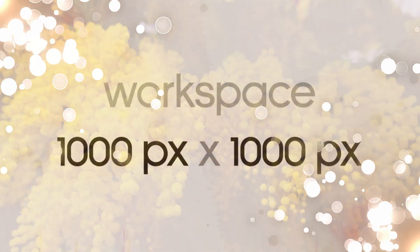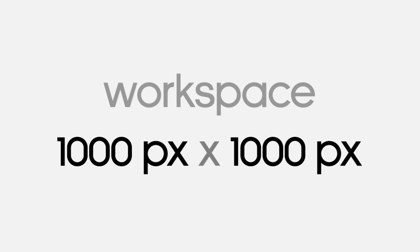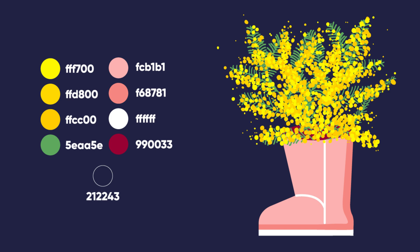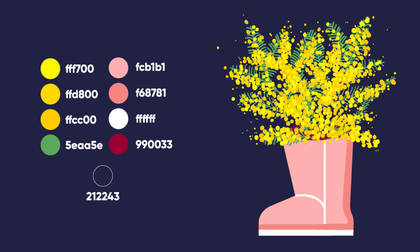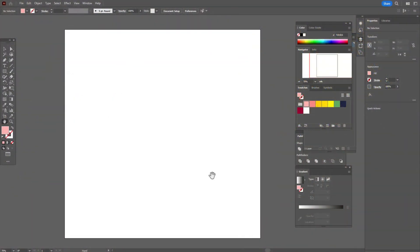Now you see the size of my workspace and these are the colors I'm going to use in this tutorial. If you want to take a closer look at the design and download an original vector file with colors, you can do it on my Patreon page — the link will be below this tutorial. Now let's start to draw mimosa with arc. I hope your workspace is ready and colors are already in the swatches panel.